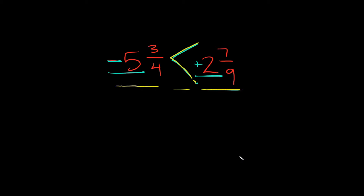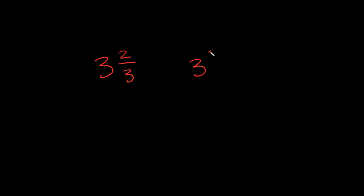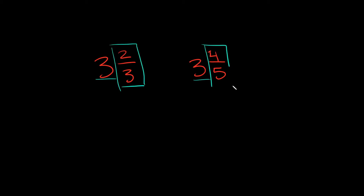Let's try a couple more. What if we want to compare three and two-thirds and three and four-fifths? In this case, they both have the same whole number — positive three and positive three. So when you have a case like that, we need to compare their fractions. We're going to compare two over three and four over five, and that's going to tell us which one is bigger.